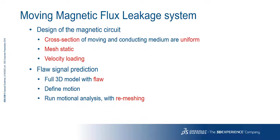When analysing a moving MFL system, you can make use of two different analysis types. Firstly, you can model a moving conductor in a static field by merely applying a velocity loading and assume that the cross section of moving and conducting media are uniform. You might use this to check the saturation of flux into the specimen, but it will not predict the signal generated by a particular type or shape of flaw. For that, you'd need to use a transient analysis, whereby the pieces move relative to one another and the problem transiently remeshes as the solution progresses. Naturally, the former type of analysis takes fewer resources to perform.